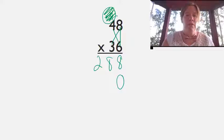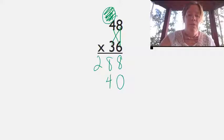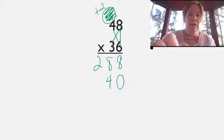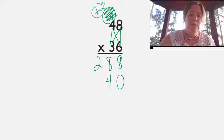Multiply the ones. Three times eight is twenty-four. My four, carry a two with a plus sign to remind me to add, and then finish my bowtie. Three times four is twelve, plus two is fourteen.